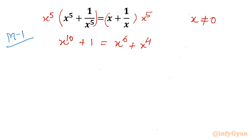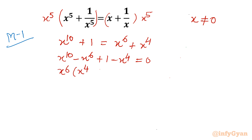Now take all the terms to one side: x power 10 minus x power 6 plus 1 minus x power 4 equal to 0. Now we can take x power 6 common, giving x power 4 minus 1 from the first two terms. And if I take minus 1 common, then it will be x power 4 minus 1 once again.